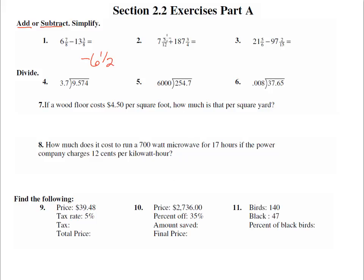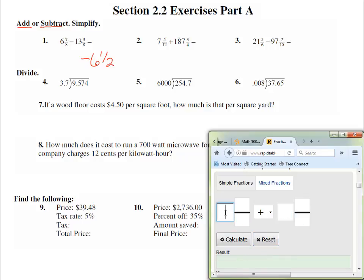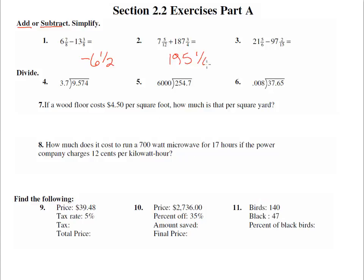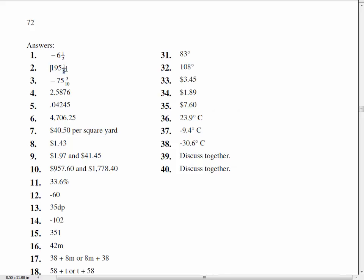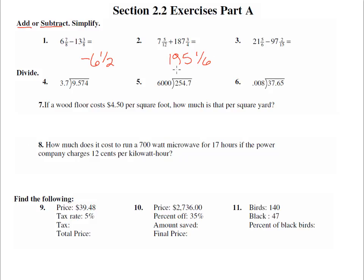Number two: 7 and 5 twelfths plus 187 and 3 fourths. We would have to get a common denominator here, but let's use that calculator. Reset so that we have 7 and 5 twelfths, and we're adding 187 and 3 fourths. Calculate that. Improper fraction looks terrible, but this is 195 and 1 sixth. Let's check our answer to make sure it's correct, and yes it is 195 and 1 sixth. Now if you chose to write those answers as their improper fractions, that's perfectly alright, or their decimal representations would be okay as well.